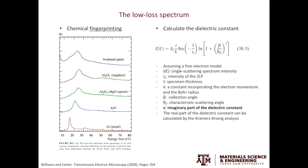You can also use the plasmon peak to calculate the dielectric constant. Assuming a free electron model, I(E) on the left-hand side of the equation is the single scattering spectrum intensity. On the right-hand side, I0 is the intensity of the zero loss peak, t is the specimen thickness, k is the constant, beta is the collection angle, and theta_E is the characteristic scattering angle. Epsilon is what we are trying to calculate — it is the imaginary part of the dielectric constant. You can use the Kramers-Kronig analysis to obtain the real part of the dielectric constant.